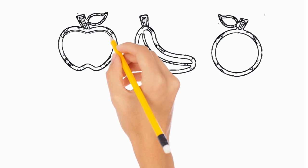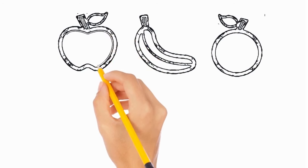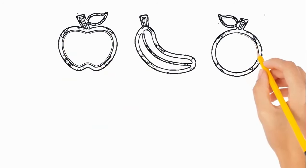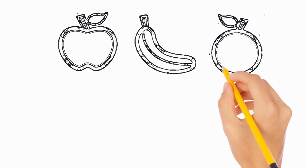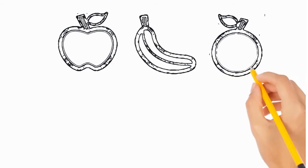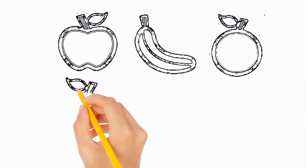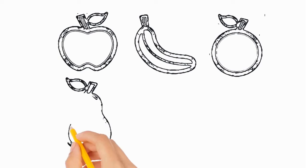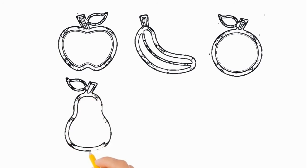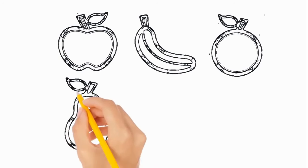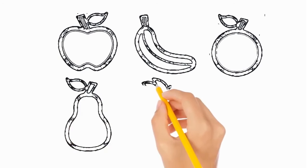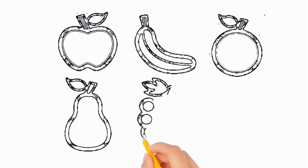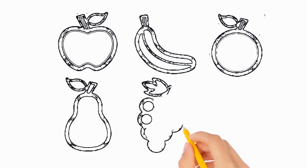A, B, C, D, E, F, G, H, I, J, K L, M, N, O, P, Q, R, S, T, U, V, W, X, Y, and Z. Now I know my ABCs, next time won't you sing with me.